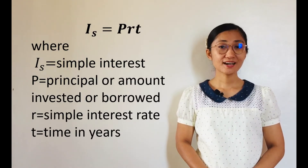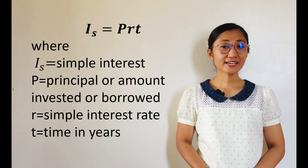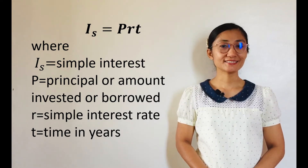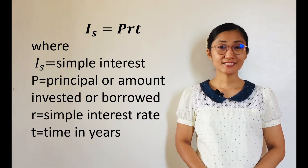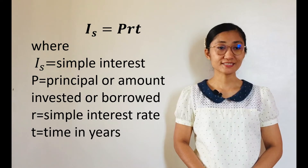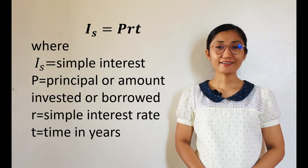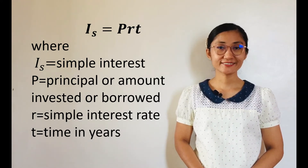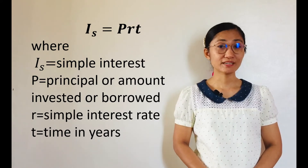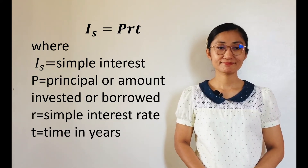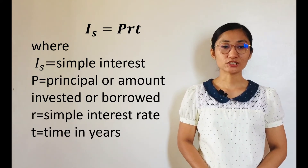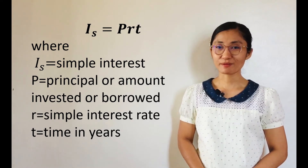Now let me present the formula we use in solving for the simple interest. That is, I sub S equals P times R times T, where I sub S is simple interest, P is the principal or amount invested or borrowed, R is the simple interest rate, and T is time in years.